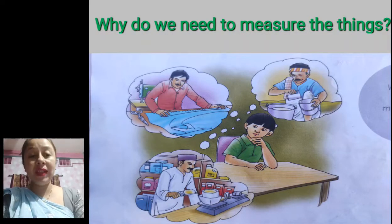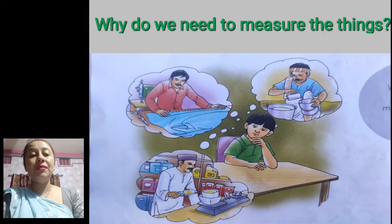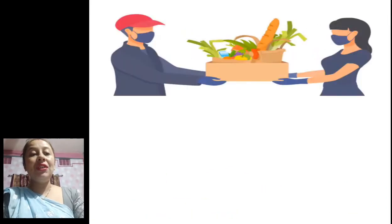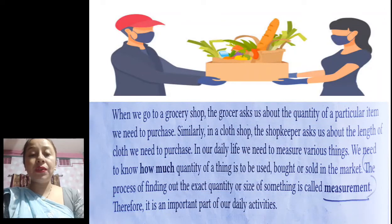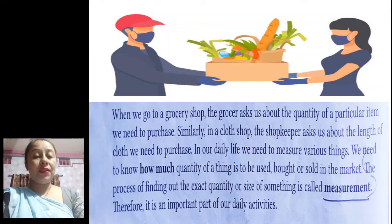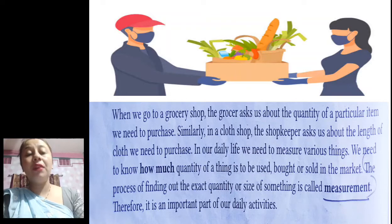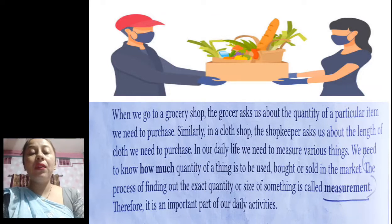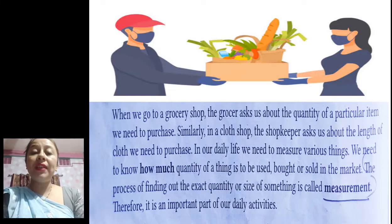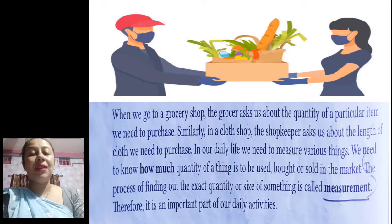So why do we need to measure things? This we will learn in this chapter — we will learn about different types of measurement, different types of units involved, and why they are needed in our day-to-day life. When we go to a grocery shop, the grocer asks us about the quantity of a particular item — how many kg of carrots or how many grams you need. Similarly, in a cloth shop, the shopkeeper asks how many meters of cloth you want. So the process of finding out the exact quantity or size of something is called measurement.